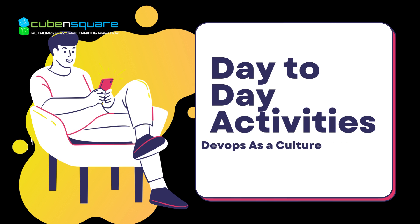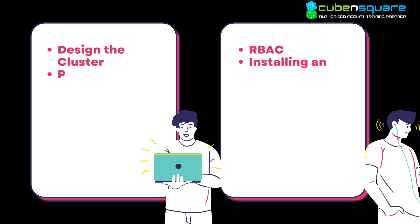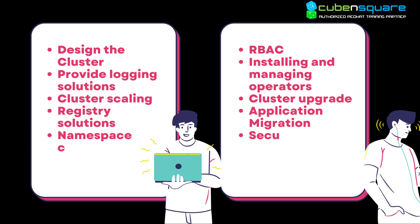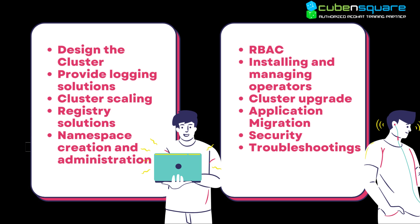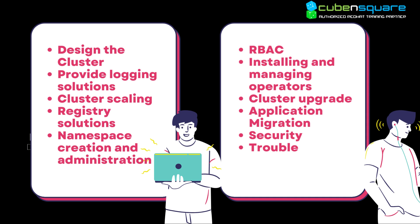Every organization will have different roles and responsibilities. Day-to-day activities vary as DevOps is a culture — everyone can adapt a different way of implementing tools, defining platforms, and designing roles and responsibilities. How many teams are needed — L1, L2, L3, operations — all depends on the specific project, account, and funding. At a high level, his activities involve designing the cluster, providing logging solutions, cluster scaling, registry solutions, namespace creation, RBAC, installing and managing operators, cluster upgrades, application migration, security, and troubleshooting.